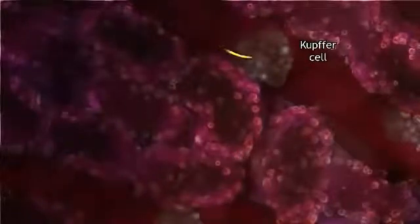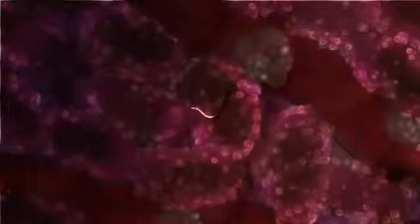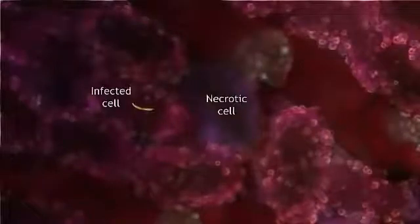A sentinel kupfer cell is the entry point to liver tissue. Leaving the blood, the parasite infects a liver cell, killing one or more other cells on its way.